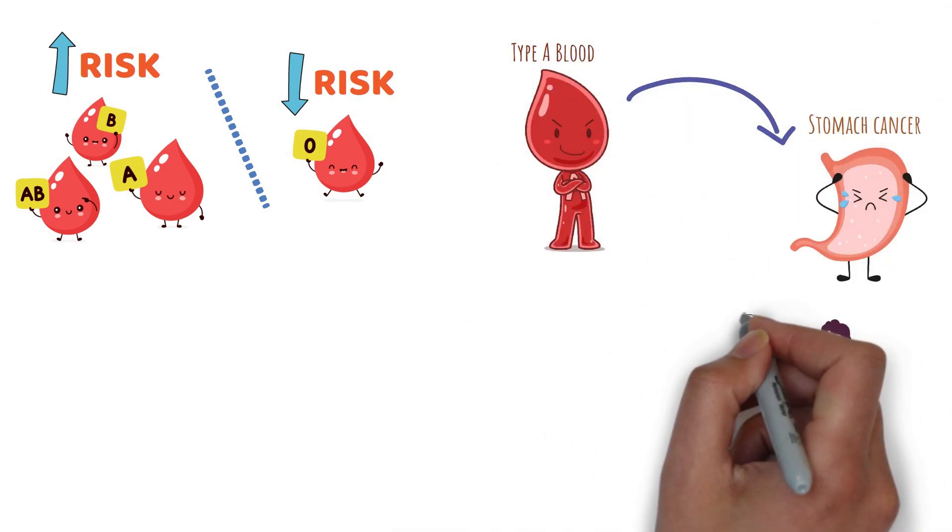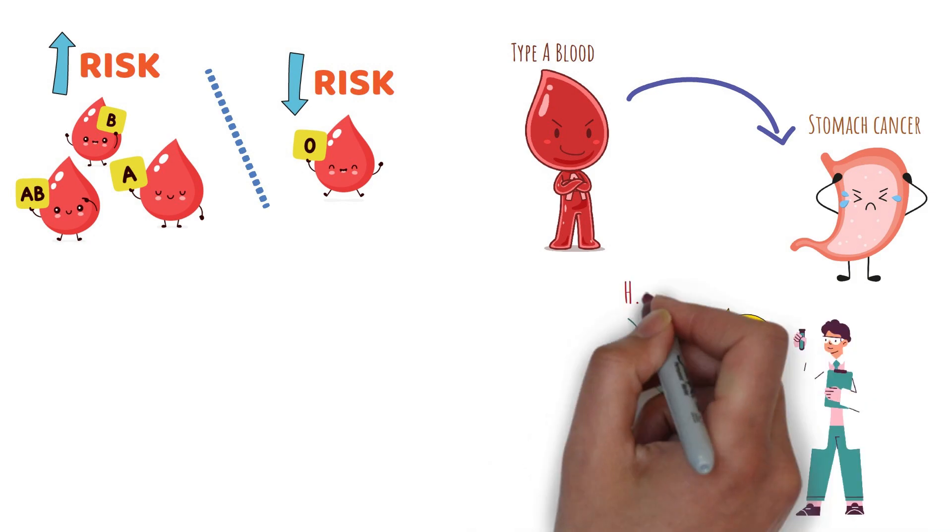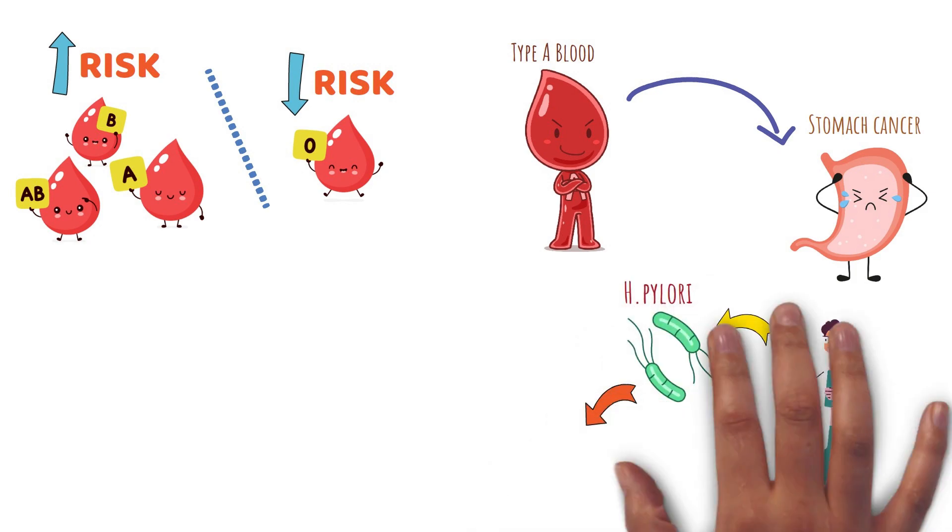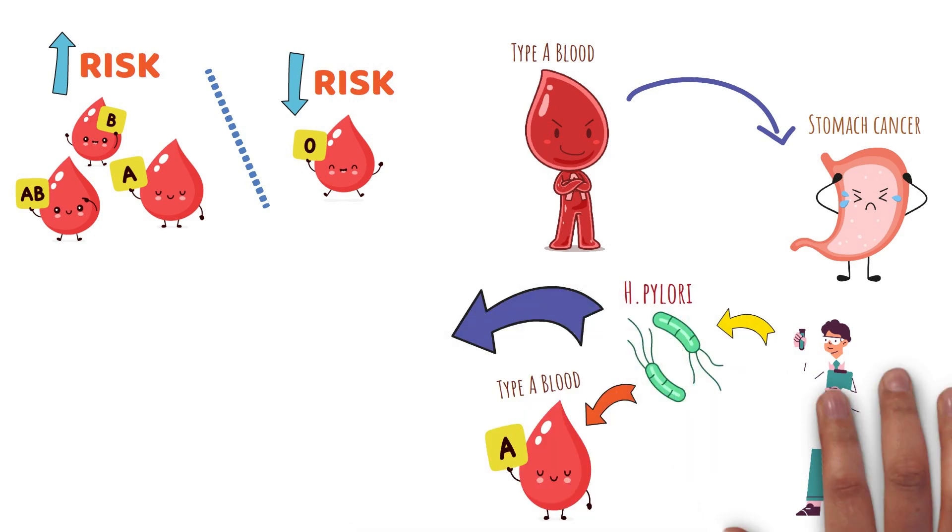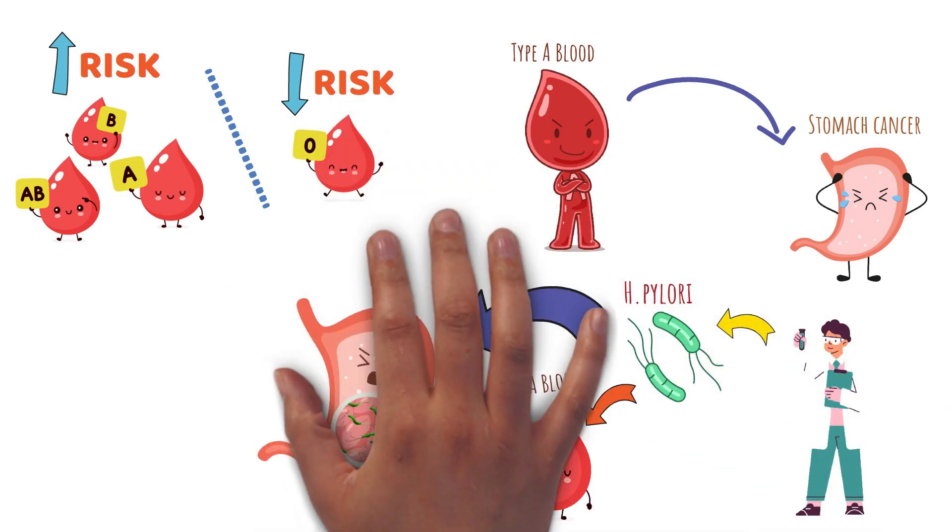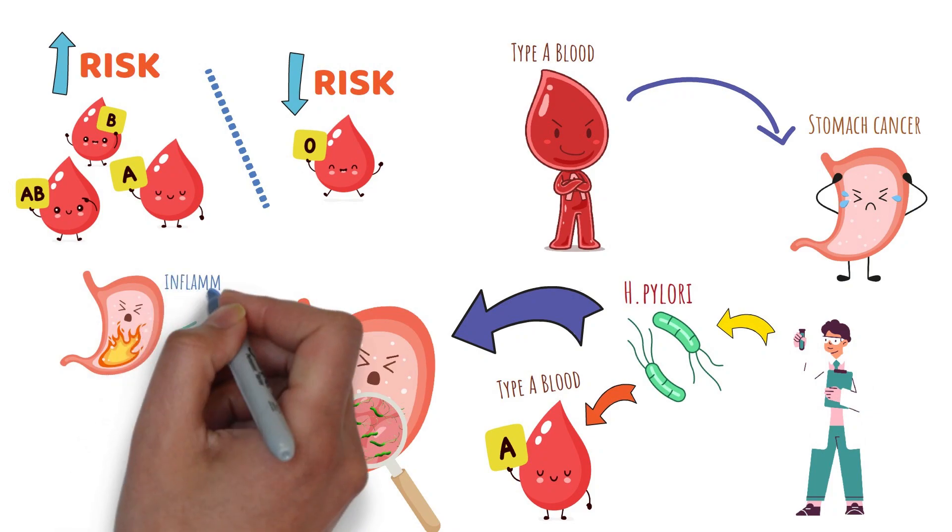Researchers think this might be because H. pylori infection is more common in people with type A blood. This is a bacteria that's usually found in the stomach. It can cause inflammation and ulcers.